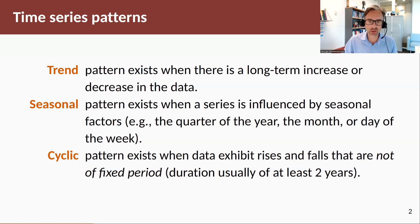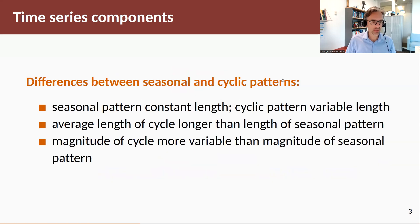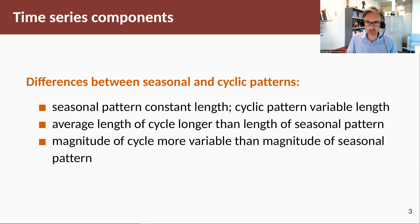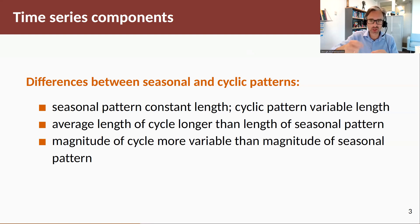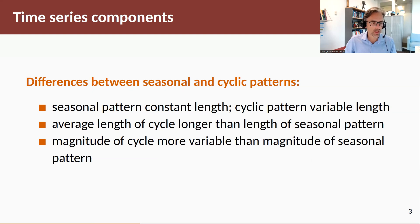Cycles don't have this regular occurrence. Seasonal patterns have constant length; cyclic patterns have variable length. The average length of a cycle is longer than the length of seasonal patterns — quarterly patterns repeat every four observations, monthly every 12 observations, while cycles last two to nine years. The magnitude of a cycle is also more variable than the magnitude of a seasonal pattern, reflecting the asymmetry described earlier.